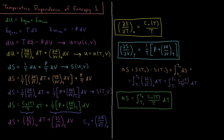This structure implies that our internal energy is a function of entropy and volume. In future videos we'll look at what are called natural variables. Entropy and volume are the natural variables of internal energy, because it is natural to express internal energy as a function of S and V, since it naturally behaves this way with these exact differentials of S and V.